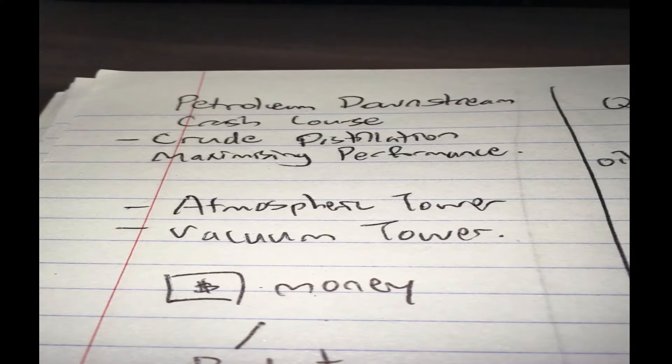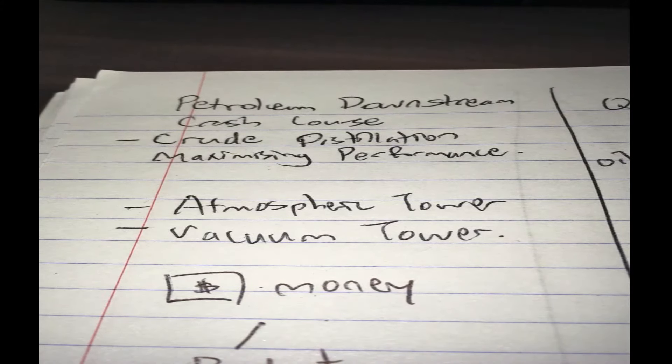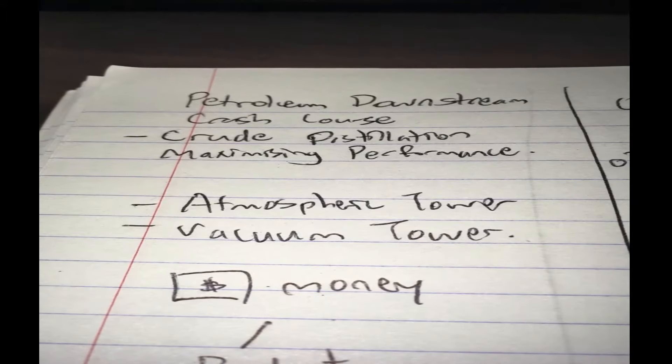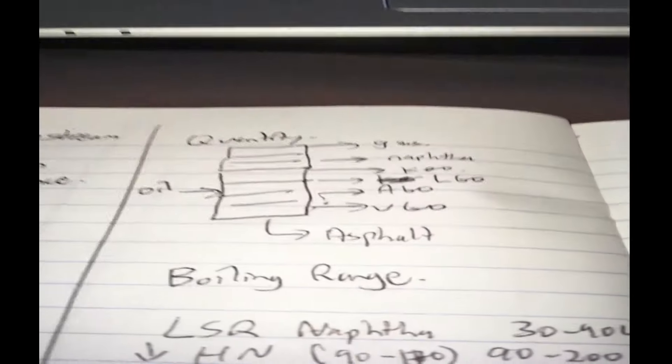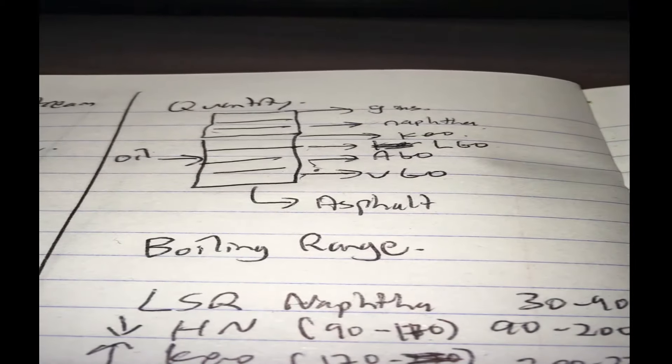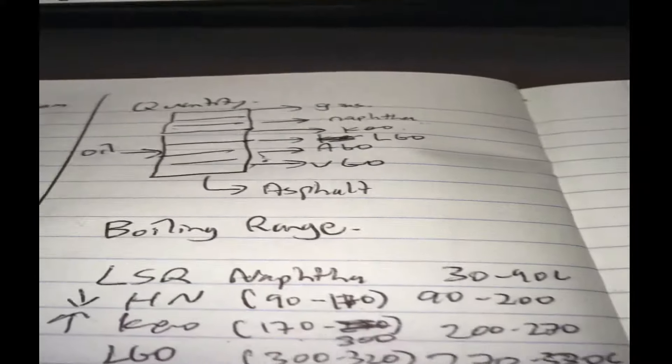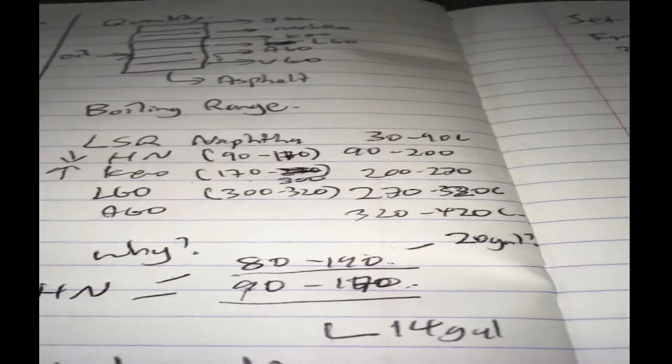Hey, welcome back guys to Petroleum Downstream Fresh course, and this is part 2 of maximizing the performance of the crude distillation tower. Now just to save time I'm using notes from the previous video, and of course we see that in a distillation unit we separate the crude oil into various fractions and we found that we could adjust those fractions.